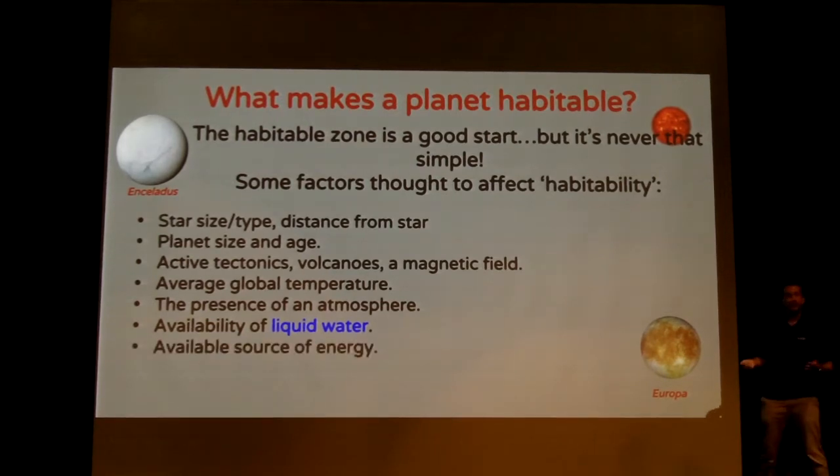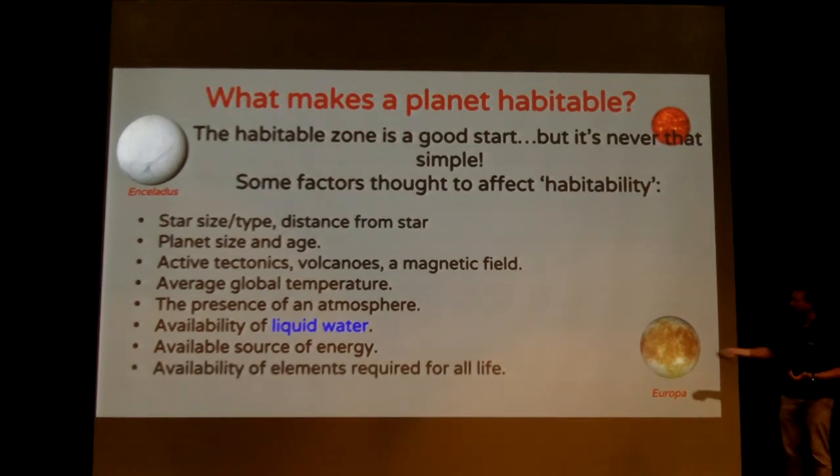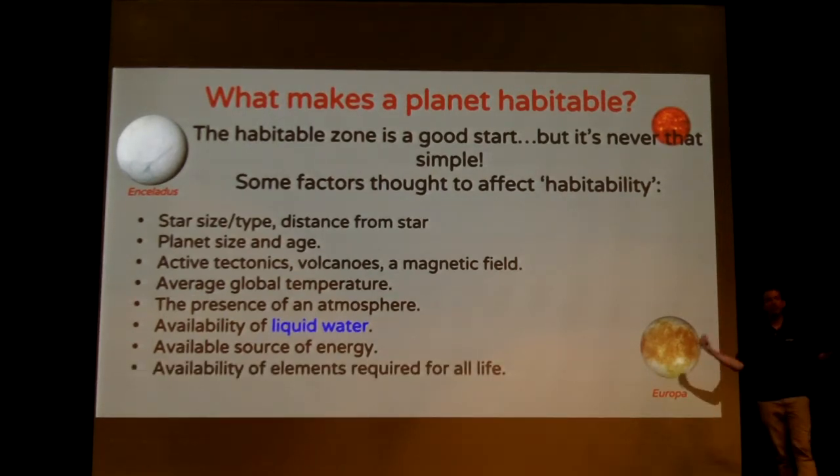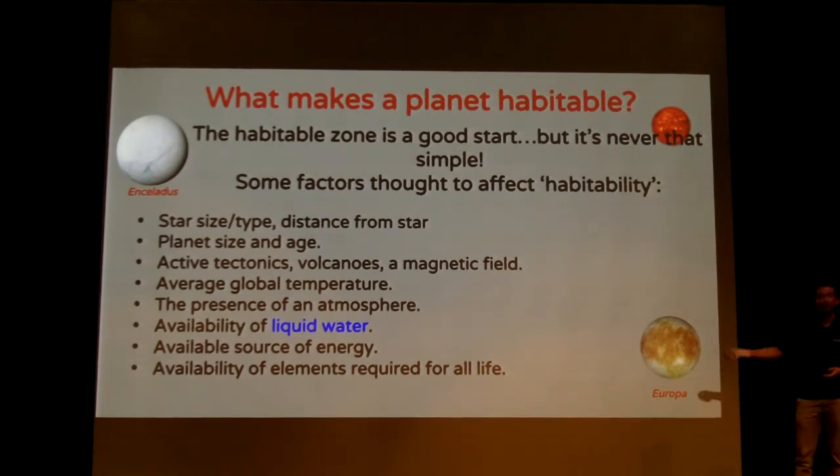You also need an available source of energy. So if you're a big organism like us, you need something to eat, or if you're plants, you need some sunlight for photosynthesis. And you need also the elements that are important in making up the body. So carbon, nitrogen, oxygen, phosphorus, sulfur. All of those are important for biological functioning, structure of the cells. And if you don't have any of those on the planet, that's going to be a problem for life, even if you're in a habitable zone.